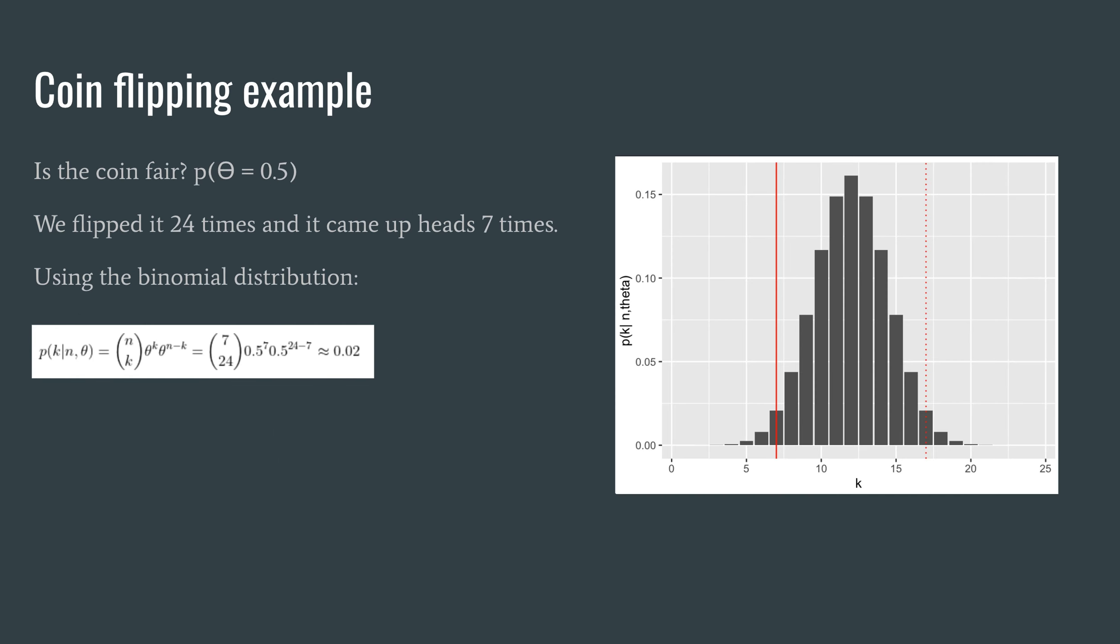So in a coin flipping example we may ask is the coin fair, expressed as the probability of theta equals 0.5. And then we generate some data. We flip the coin 24 times and it comes up heads seven times. And we can model this using the binomial distribution.